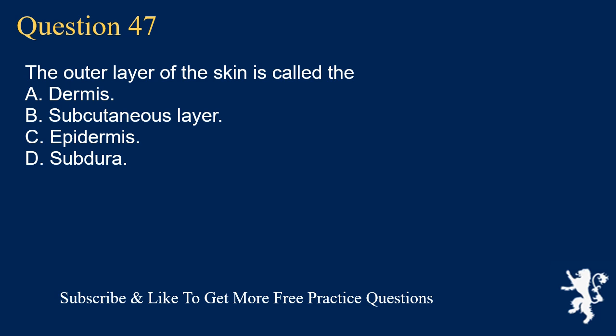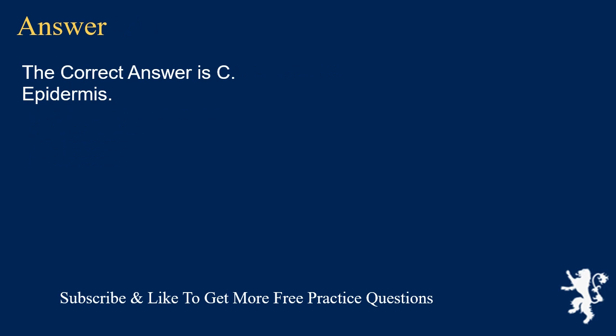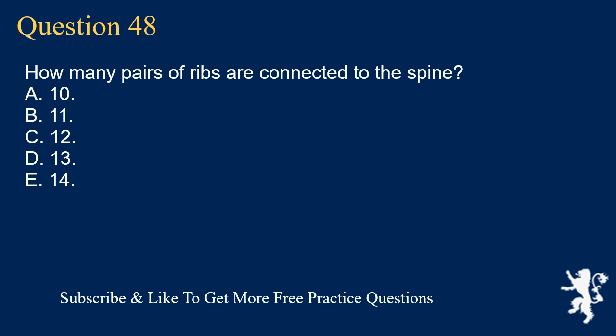Question 47. The outer layer of the skin is called the: A. Dermis. B. Subcutaneous layer. C. Epidermis. D. Subdura. The correct answer is C. Epidermis.